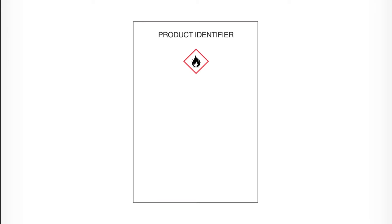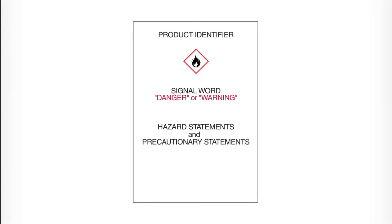Labels, in order to be compliant under the new HAZCOM 2012 system, are going to have to include some very specific label elements, and as a result they may change substantially in appearance. The required label elements are product identifier (the name of the product), pictograms, signal words, hazard statements, and precautionary statements, as well as the name, address, and phone number of the manufacturer.